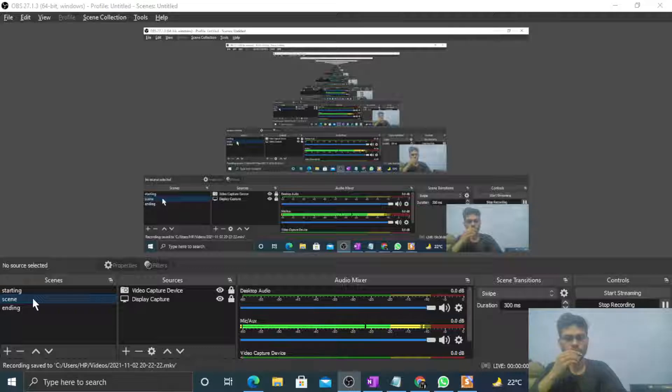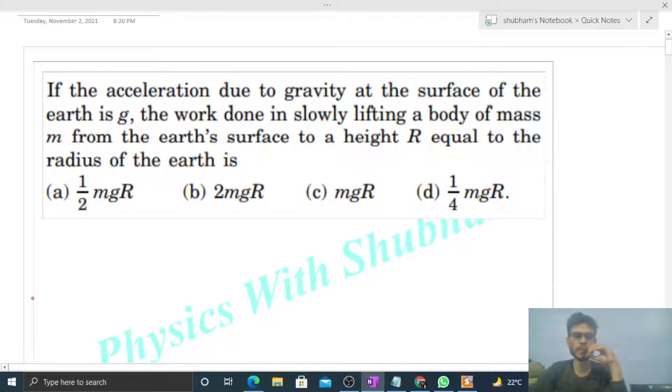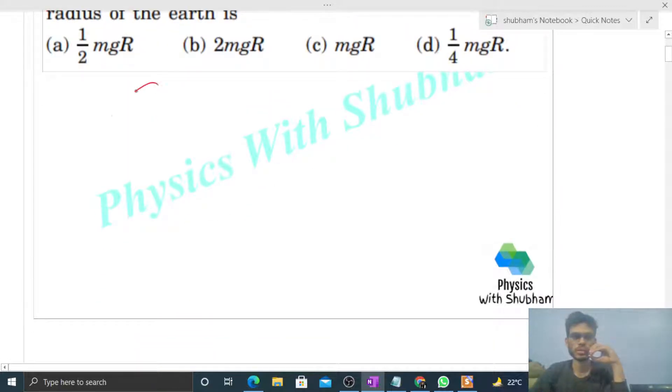Okay hi everyone, so today let's discuss this interesting problem. It says if the acceleration due to gravity at the surface of earth is g, work done in slowly lifting a body of mass small m from the earth's surface to a height r equal to the radius of the earth is?